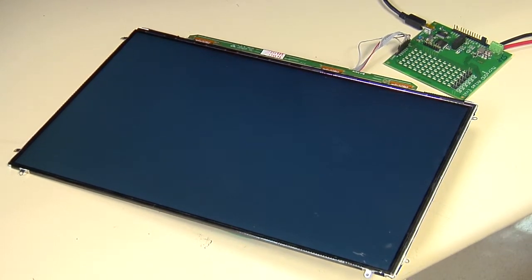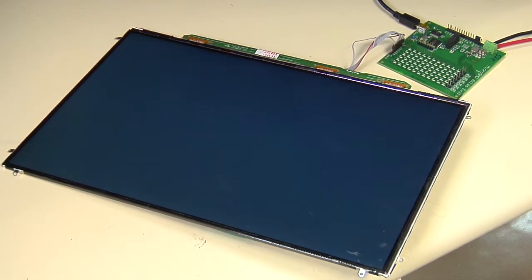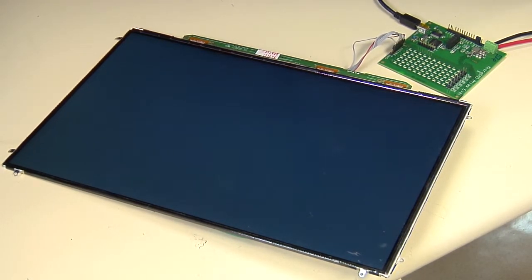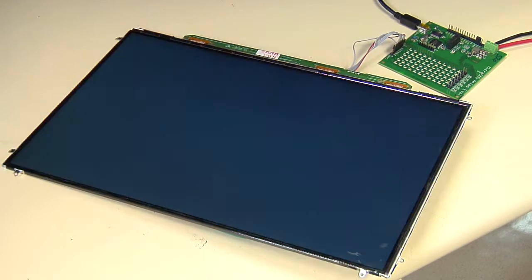I am going to demonstrate two key features with the evaluation board. First, I am going to show the step brightness response starting from 3% brightness setting to 98 and back. Right now it is set to 3%. I am changing it to 98. Here you can see the abrupt transition. I am back to 3%.